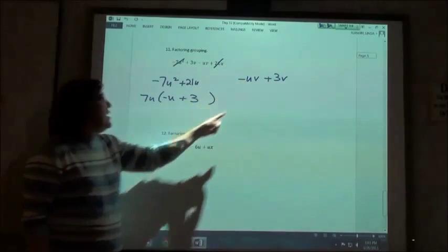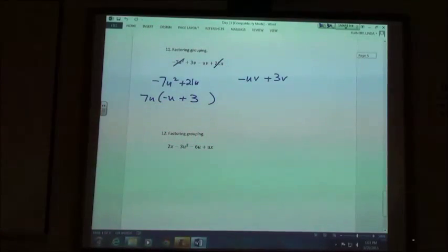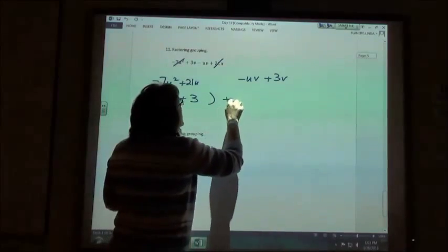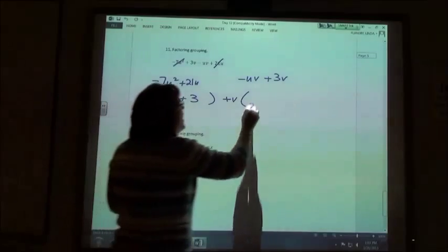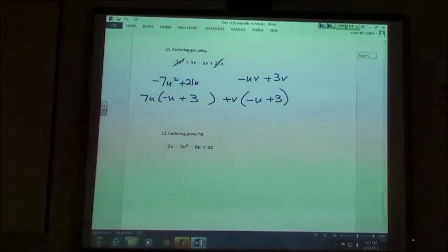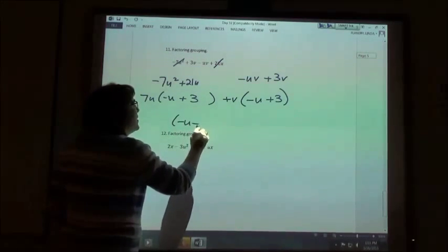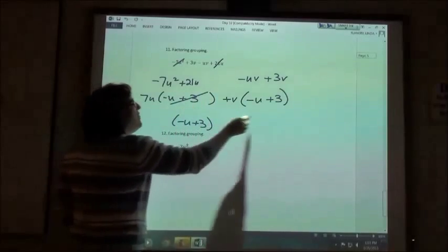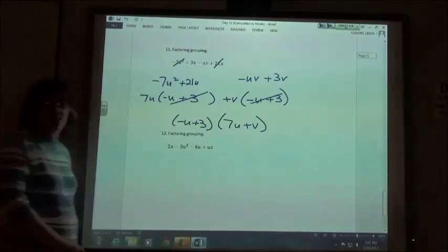So if I have a negative uv and I want to get negative u, what should I divide out? V. Just the v and it's going to be positive because I don't want my sign to change. So if I divide them both by a positive v, I'm going to get negative u plus 3, which is what I'm supposed to get, right?